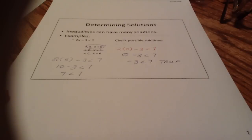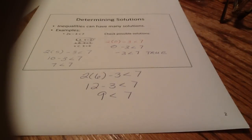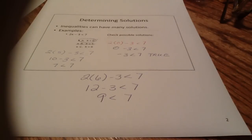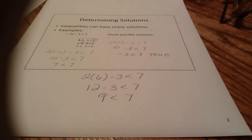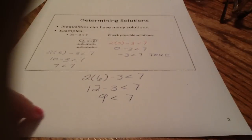Let's check the last one: x equals 6. So 2 times 6 minus 3 less than 7. 12 minus 3 less than 7. 9 less than 7 — also not true. So 0 is one solution. Inequalities have many solutions, so 0 is just one of them. 6 and 5 are not solutions, but 0 is.